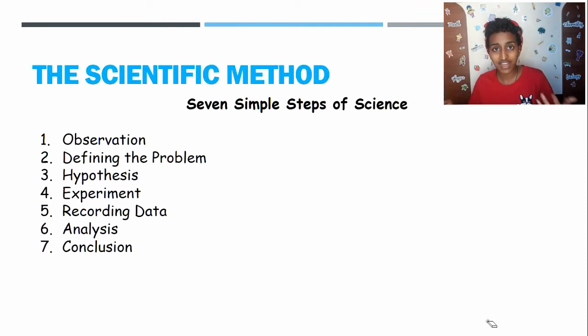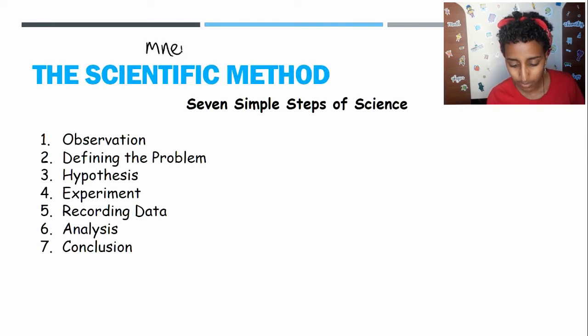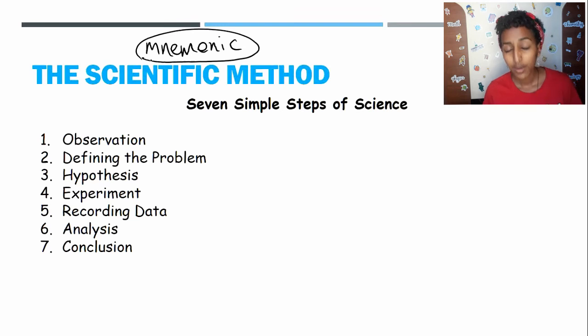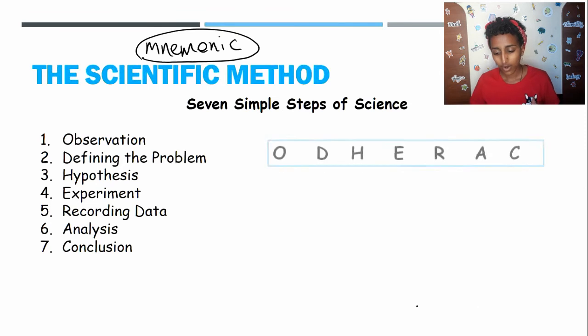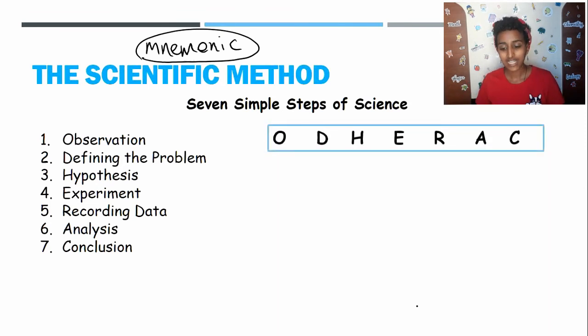A good way to remember a list of any sort of thing is by using a mnemonic. A mnemonic. Now I know it has a very weird spelling, but a mnemonic is a way of memorizing something by relating it to other concepts or other ideas. For example, let's take the first letter of every word in this scientific method. O-D-H-E-R-A-C. This in itself can be a mnemonic. But that doesn't really mean anything, so it's not that helpful. So instead, let's give each letter another word.